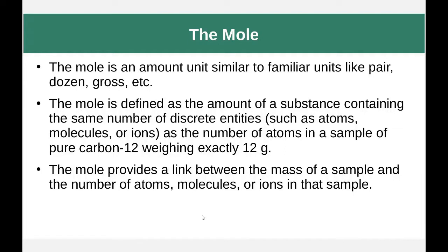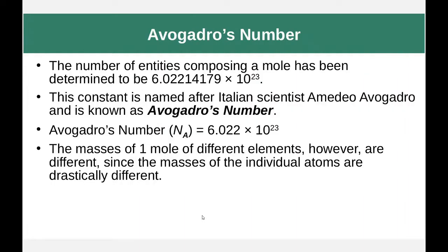The question is, how much is a mole? A mole is 6.02214179 times 10 to the 23rd things — a whole bunch of them. This number is known as Avogadro's number, abbreviated with a capital N and a subscript A. Usually we just use the truncated value of 6.022 times 10 to the 23rd.